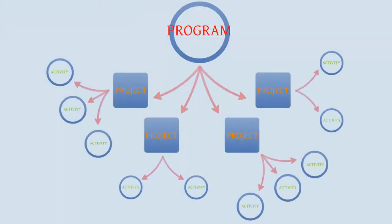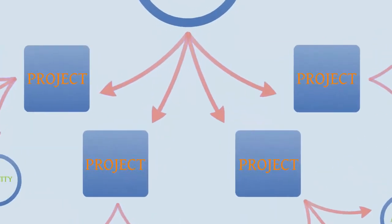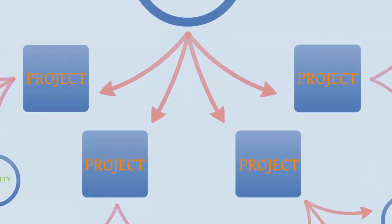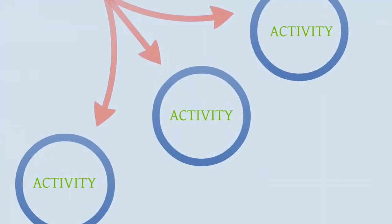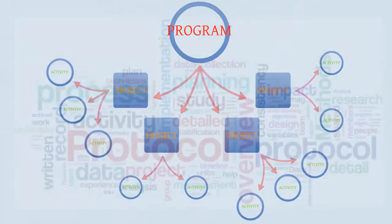Within a programme there are usually several projects focusing on different areas of research. Within each project there are usually many activities which focus on different aspects of the project, for example field trials, surveys and climate analysis. This video discusses protocols at the lowest level of this hierarchy, at the activity level.